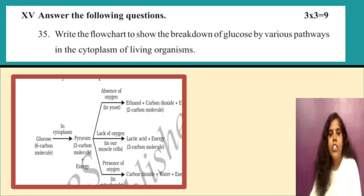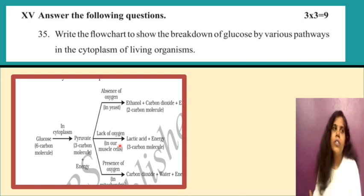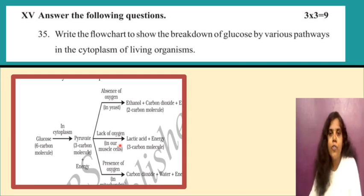Write the flow chart showing the breakdown of glucose by various pathways in the cytoplasm. Glucose in the cytoplasm is converted into pyruvate. Pyruvate can then be converted into three possible products: in the absence of oxygen, it becomes ethanol, carbon dioxide, and energy; under lack of oxygen (as in muscle cells during exercise), it converts to lactic acid; and in the presence of oxygen, it converts to carbon dioxide, water, and energy.